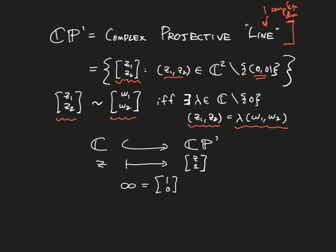This is an equivalence relation because you can divide by the lambda. Now this is supposed to expand C to a larger set because I can map any z in C to z, 1. And so any point of the form z1, z2, where z2 is non-zero, can be converted to a point of this form by factoring out the z2.